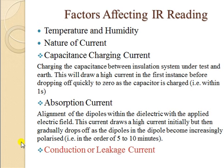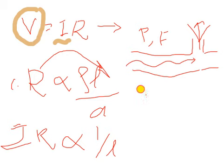Let us focus on the nature of current flowing through the insulation. There are three different types of currents which may be present whenever actual current flows in the circuit. First is capacitance charging current — take an example of a cable, which has a conductor and insulation above it, and there is cable capacitance. This capacitance charging current is used for charging the capacitance between the insulation system under test and earth. It draws a high current initially before dropping off quickly to zero as the capacitor is charged.